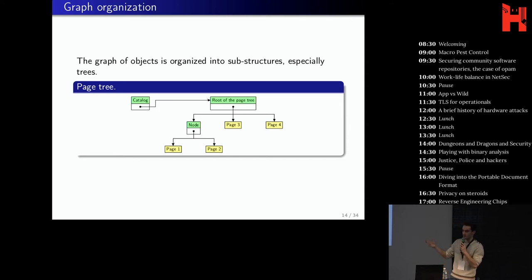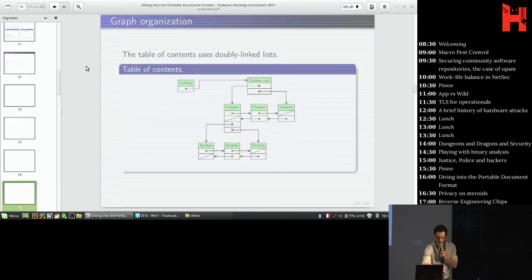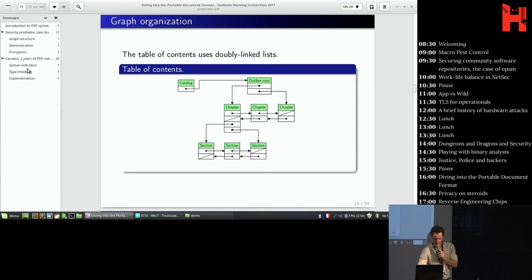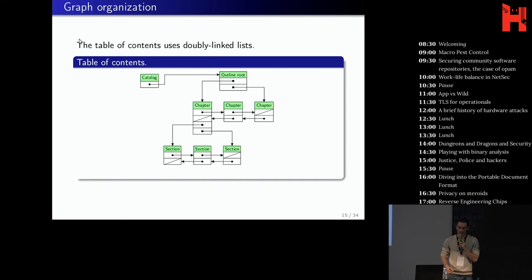So as I said, the objects form a graph and this graph is organized into sub structures. Most of them are trees. For example, if you take the pages of the document, they are organized into a tree. So if you start from the logical root of the document, the catalog, it points to the roots of the page tree. Then you have a tree made of objects and the leaves of the tree are the pages. So the first page is just the leaf on the left hand side and then the second page is just on the right of it and so on. So it's quite complicated, I think, just to represent a list of pages, but they decided to do it this way. Then you have the table of contents. So here if I show it, on the left you can have some sections and chapters to navigate quickly in the document.